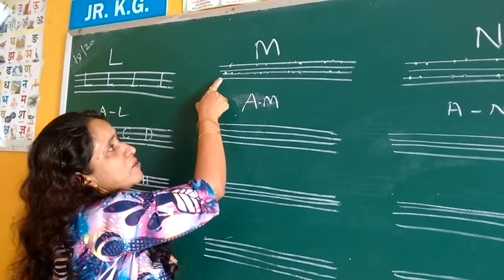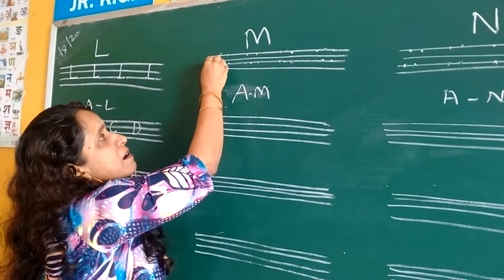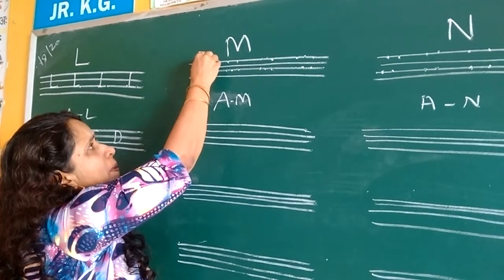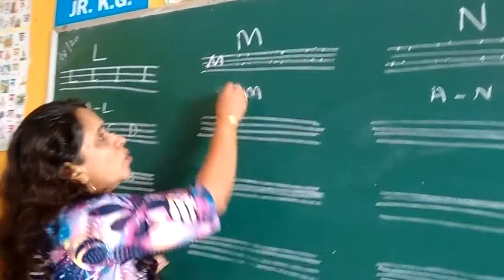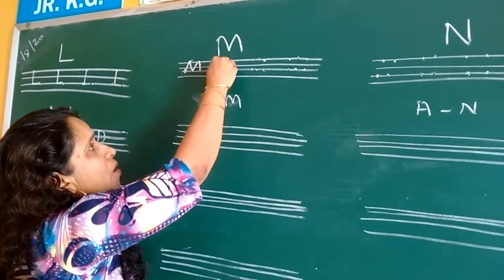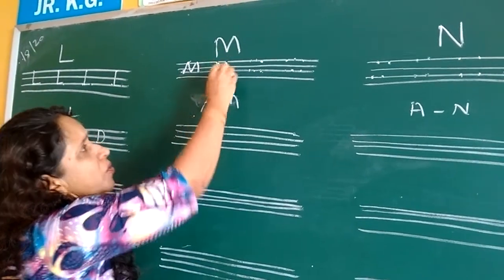Up, you have to start from this third line. Up, down, up, down. This is M for mango. Up, down, up, down.